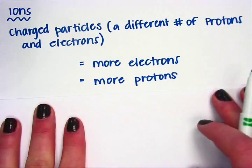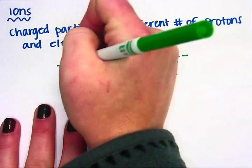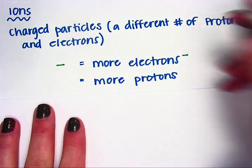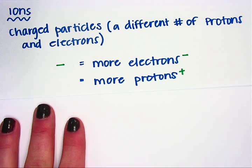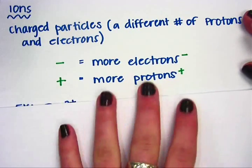If an element has more electrons, since electrons are negative, the element would have a negative charge. And if the atom has more protons, since protons are positive, then it would have a positive charge. That's what the charge means.